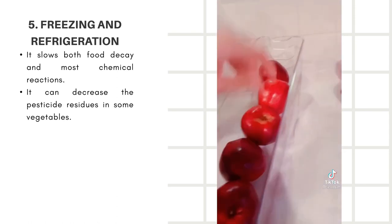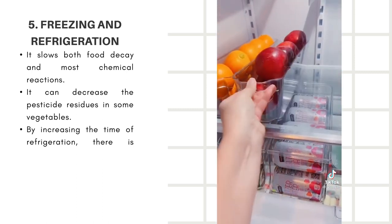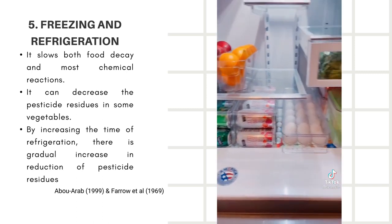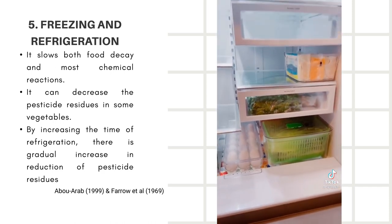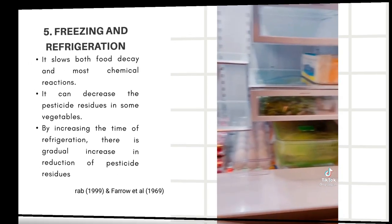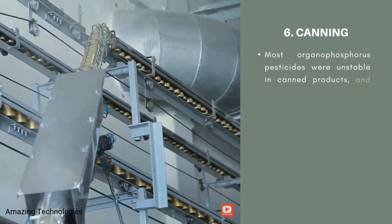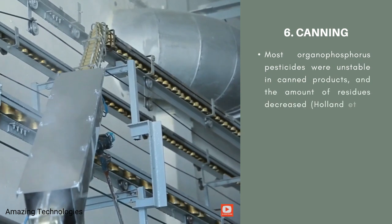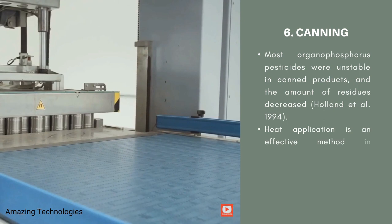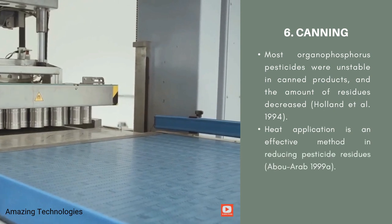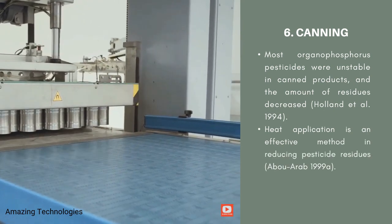Fifth, freezing and refrigeration — freezing and refrigeration will slow both food decay and most chemical reactions, and can also decrease pesticide residues in some vegetables. By increasing the time of refrigeration, there is a gradual increase in the reduction of pesticide residues. Lastly, canning — most organophosphorus pesticides were unstable in canned products and the amount of residues decreased, because heat application is an effective method in reducing pesticide residues.